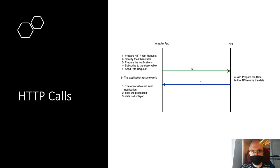Because HTTP is async, once the data is returned from the API, the observable captures it and sends an event. Because we've subscribed to those events, we receive notification that the API has returned data, then we can process and display it. This is a basic introductory overview of observables and HTTP calls.